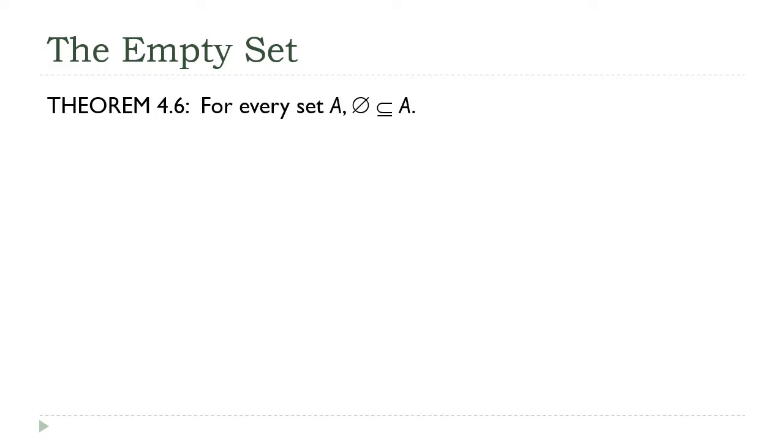So now we've seen several examples of proofs involving sets, and they all relied on the method where you start by saying let X be an element of one set, and then you show that it has to be an element of another set, and that forces the first one to be a subset of the other. That's a great technique - it gets used a lot, there's a lot you can do with it.